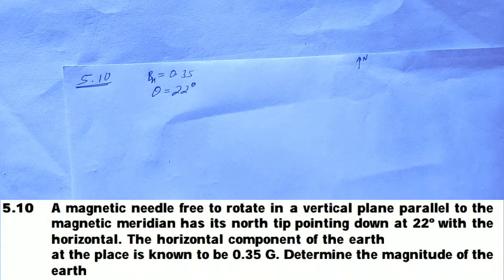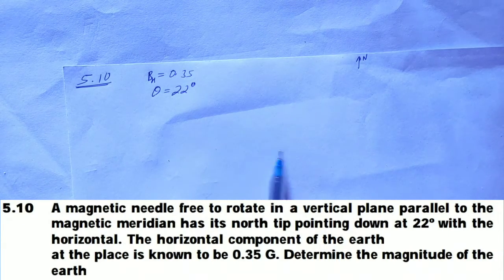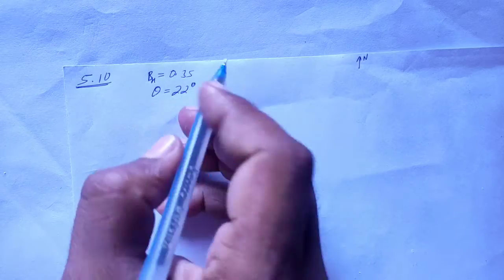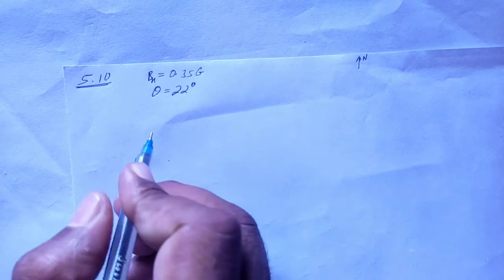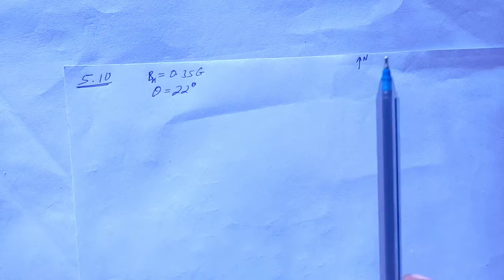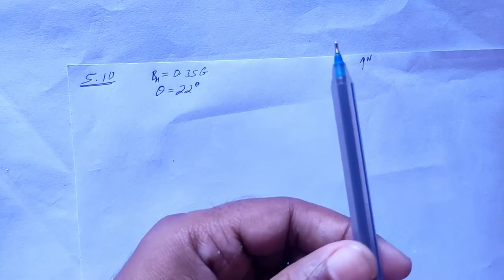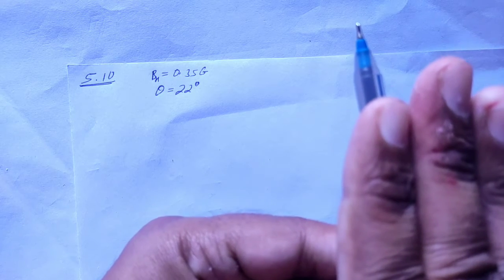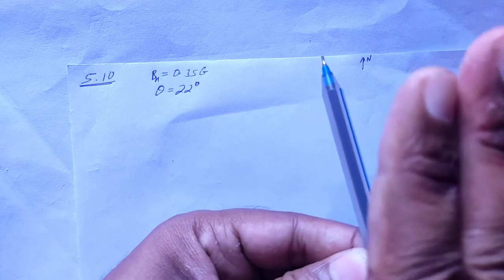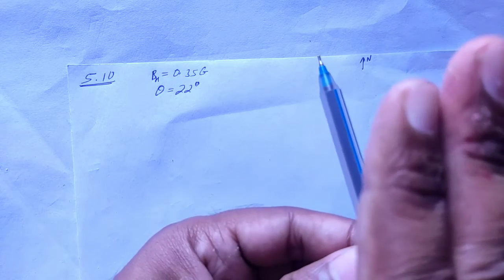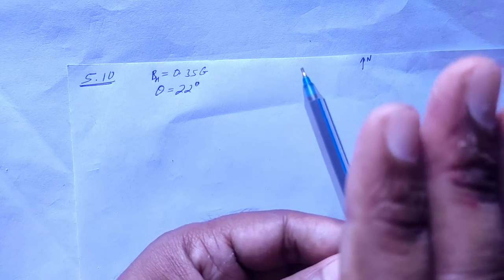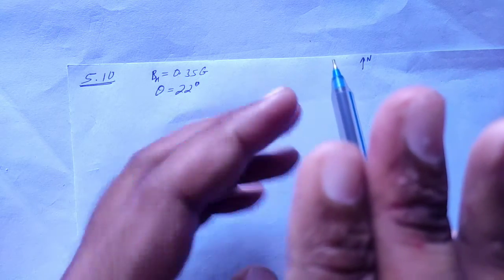At that place, the horizontal component of the magnetic field is 0.35 gauss and the dip angle of the earth's magnetic field is 22 degrees.